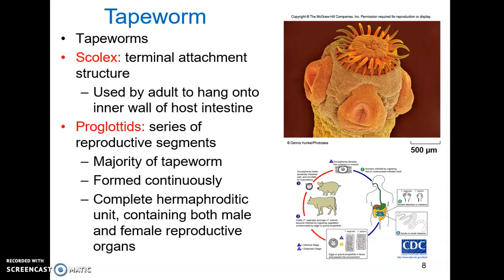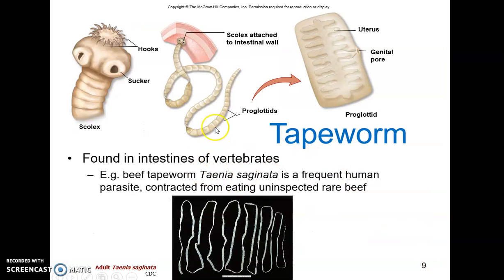Each proglottid is a complete hermaphroditic unit, containing both male and female organs. As proglottids are formed, they migrate toward the end of the organism, mature, and are fertilized — mostly relying on cross-fertilization. Then embryos detach and are lost to the environment to, hopefully for them, infect another organism. Here we can see those structures: the scolex, and then a long series of proglottids, each with a complete set of reproductive parts.